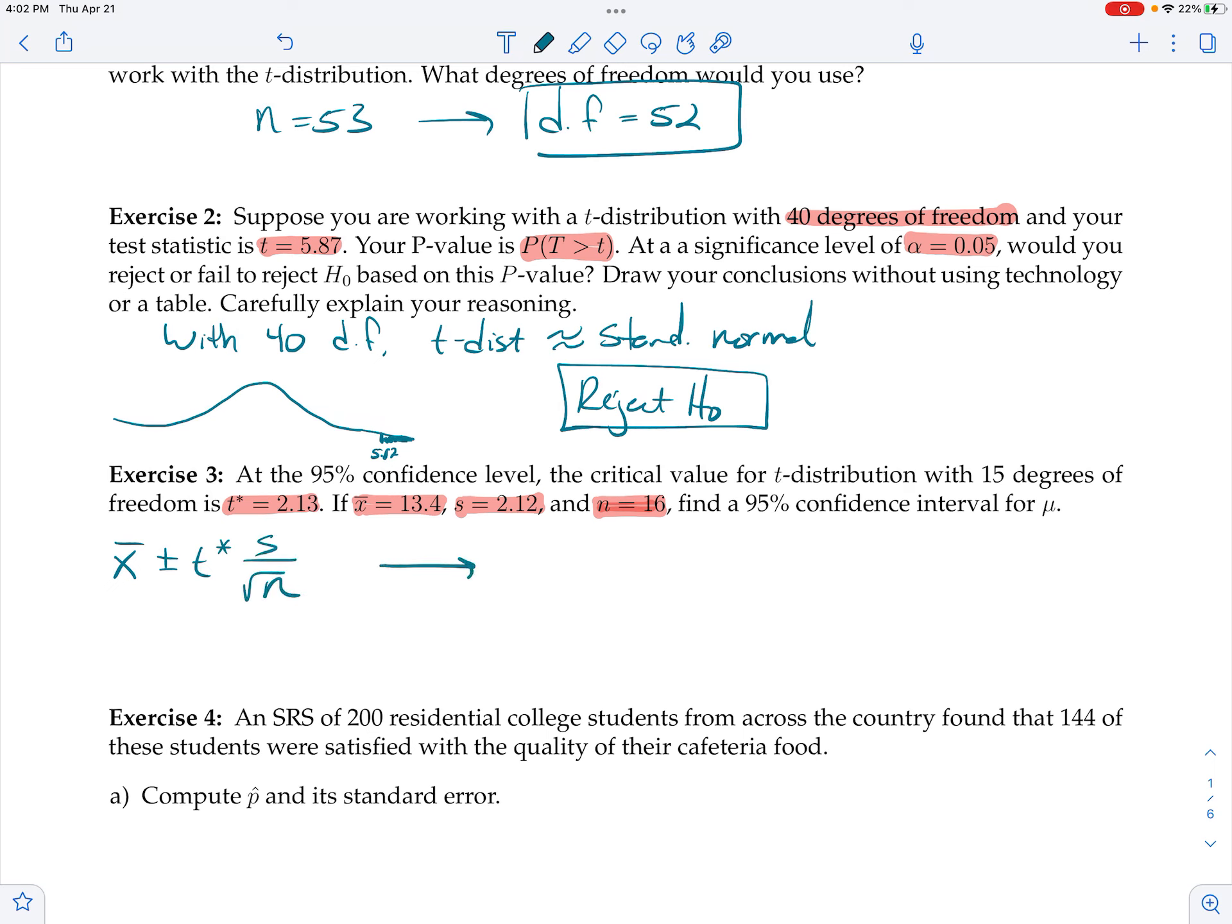And so when you plug everything in, you're going to get 13.4 plus or minus t-star, which is 2.13 times s, which is 2.12, sample standard deviation, divide by square root of 16, which is 4.